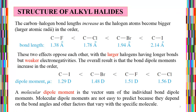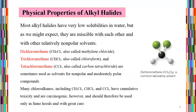The overall result is that the bond dipole moment increases in the order: C–I, C–Br, C–F, and C–Cl. This means the dipole moment is highest for the C–Cl bond compared to the iodine, bromine, and fluorine systems. A molecular dipole moment is the vector sum of the individual bond dipole moments. Molecular dipole moments are not easy to predict because they depend on bond angles and other factors that vary with the specific molecule.